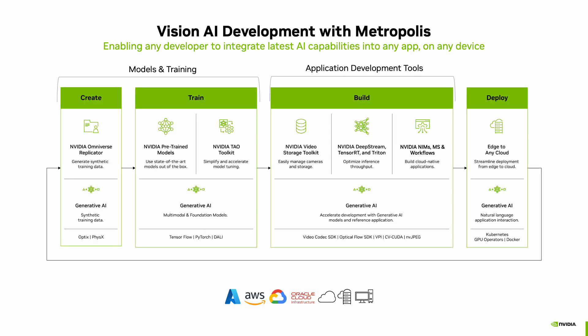Metropolis helps developers build end-to-end vision AI with easy-to-use tools. There are several components and you can look at it as a progression from left to right. Each component of Metropolis can be used independently or together — think of these as building block software. There are state-of-the-art pre-trained foundation vision models and a runtime toolkit to fine-tune or optimize them.